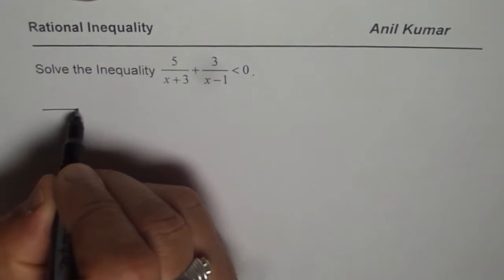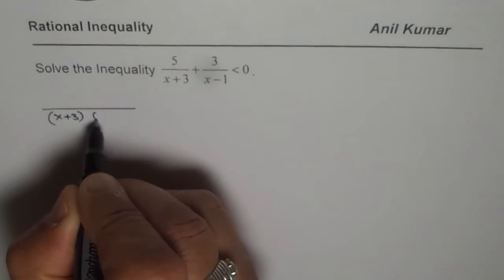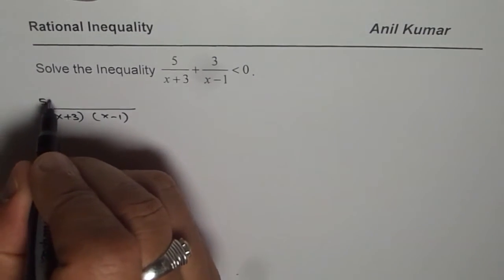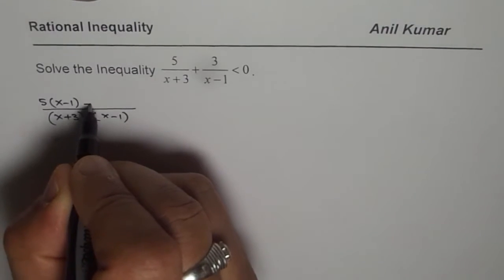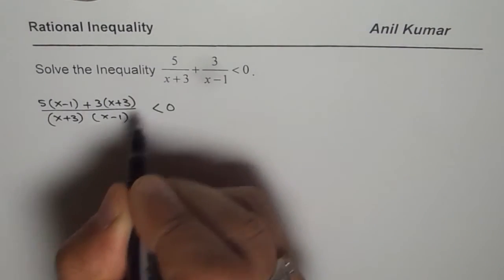Let us take common denominator. We get x plus 3 times x minus 1, cross multiply 5 times x minus 1 plus 3 times x plus 3, and that should be less than 0.